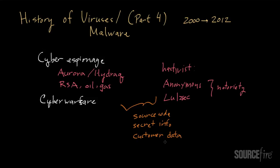What is particularly scary about these attacks is that not all of them were technically sophisticated. The Aurora attack and the RSA attack in particular were driven by simple mechanisms — really social engineering was at the heart of both. What happened is somebody at a company, an engineer or someone in a department, was tricked into opening up an email attachment, maybe a spreadsheet sent to somebody in the finance department, and once that attachment was opened the compromise took place.